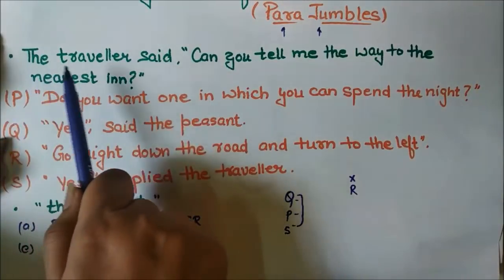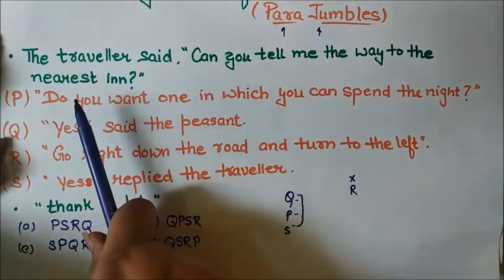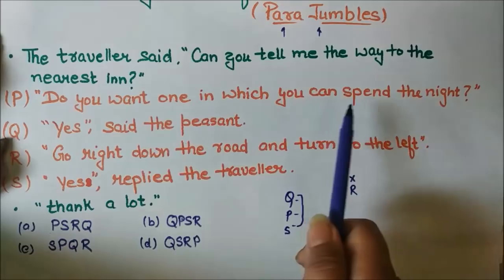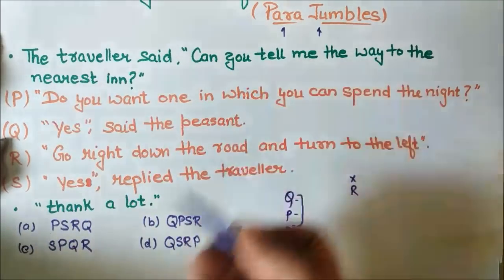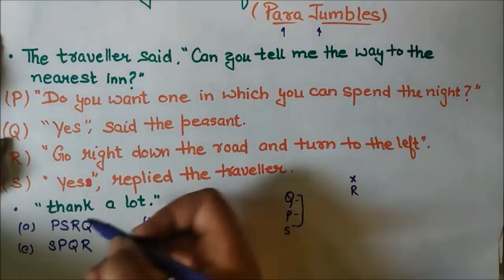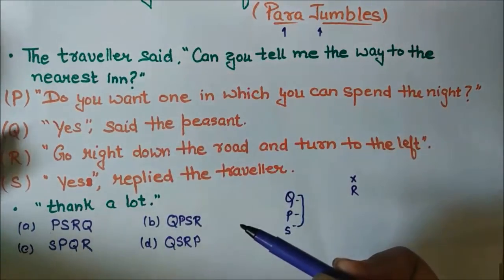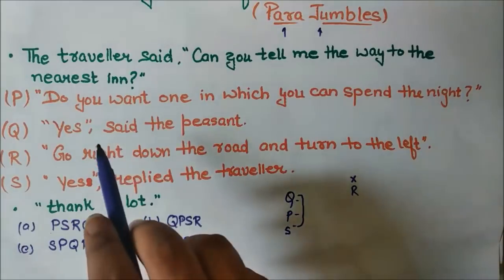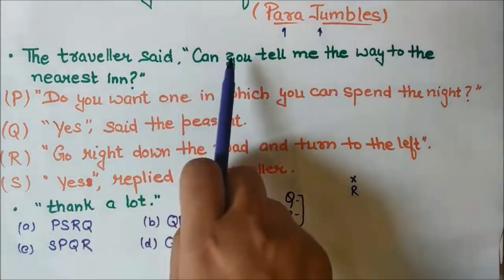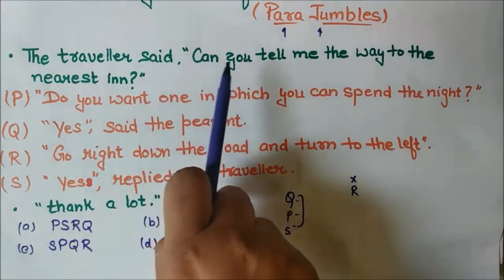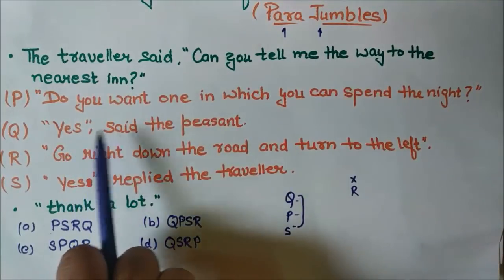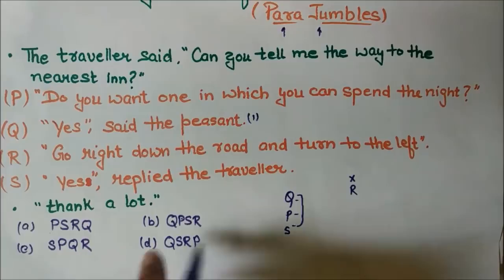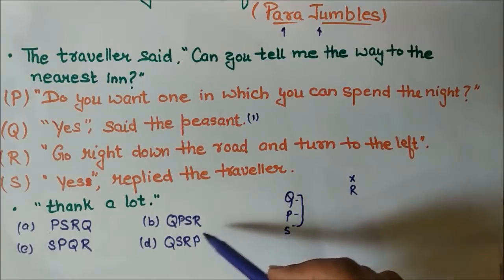Now let us see: if I start with statement P — 'Do you want one in which you can spend the night?' — the first statement is 'The traveler said: can you tell me the way to the nearest inn?' After a question there will be some answer, not another question, so P cannot be the reliable first one. If I go for Q — 'Yes, said the peasant' — after the traveler's question, an answer comes. So Q can be the first statement, and then I have two options: Q P S R and Q S R P.